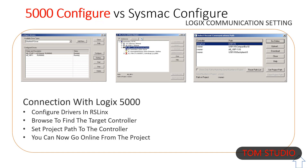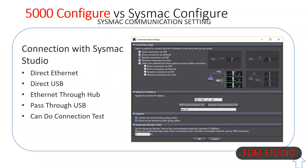In Sysmac Studio, you select the connection method in the project. If opening a project from a controller, the 'select one' option is not available. Enter an IP address if using Ethernet via hub or remote via USB. If you choose the 'select one' option, you are prompted to choose every time you click to go online. Both USB and Ethernet use CIP and HTTP.